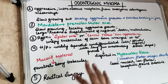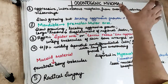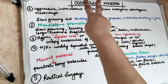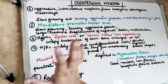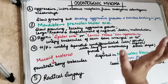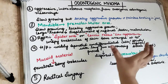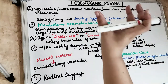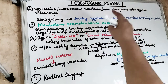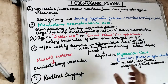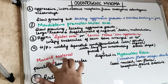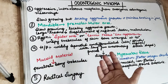Talking about odontogenic myxoma, as the name suggests, 'odontogenic' means this is going to be an odontogenic tumour — that means the origin is from the odontogenic mesenchyme. The odontogenic mesenchyme is placed in the myxomatous ground substance, also called the mucoid ground substance.